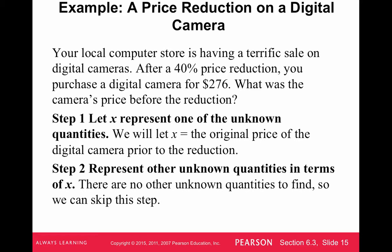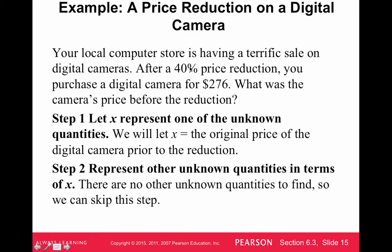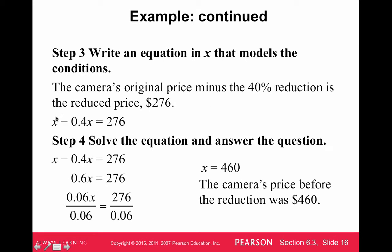Your local computer store is having a sale on digital cameras. After a 40% price reduction, you purchase a digital camera for $276. What was the camera's price before the reduction? We let x represent the original price of the digital camera. When you have a 40% reduction, the equation is the original price minus 40% of that price equals the sale price. To take 40% of a number, convert it to a decimal — 0.40 — and multiply by the value. So x minus 0.40x equals $276.